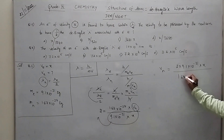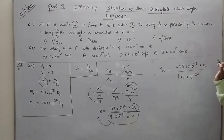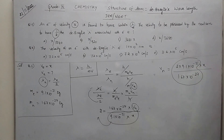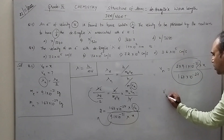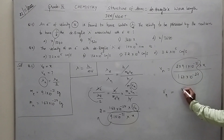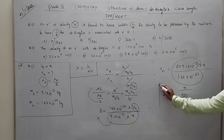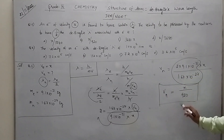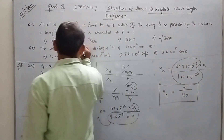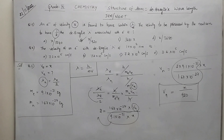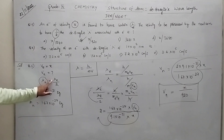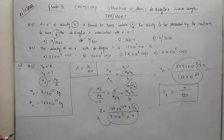After calculating to simplify, vn will become x divided by 920. So the answer is x by 920. Very simple — given that the wavelength of neutron is half of the wavelength of electron, using this alone we have identified the velocity of the neutron. Now next question, question number 6.